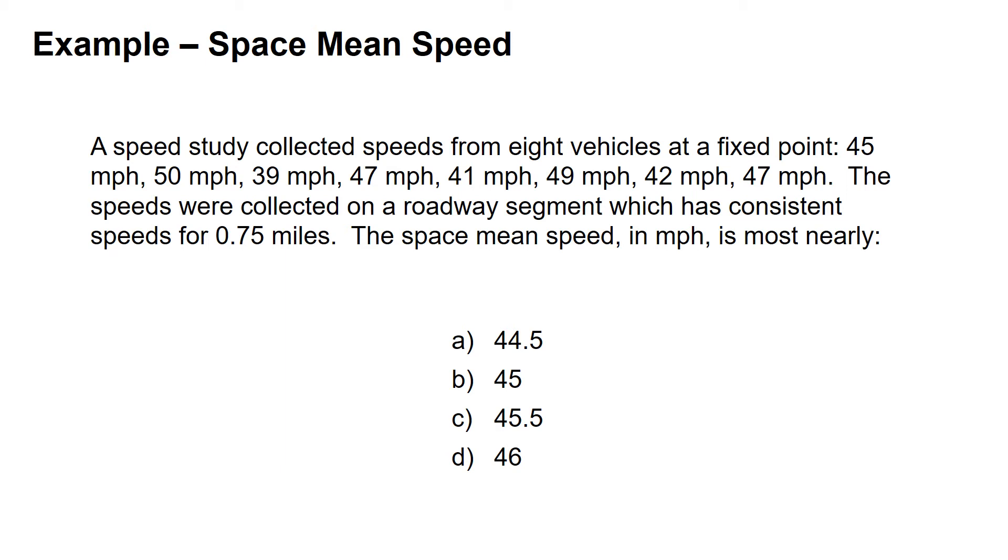We have a speed study that collected speeds from eight vehicles at a fixed point: 45, 50, 39, 47, 41, 49, 42, and 47 miles per hour. If we were actually doing a speed study, we'd have many more speeds, but this will help us work through this example. The speeds were collected on a roadway segment that has consistent speeds for the 0.75 mile segment, and we're asked to find the Space Mean Speed.